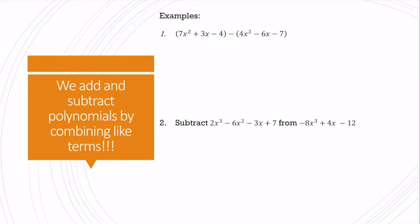So here I have 7x squared plus 3x minus 4 minus 4x squared minus 6x minus 7. And I'm doing subtraction examples because we need to remember to distribute this negative right here. So I have 7x squared plus 3x minus 4 minus 4x squared plus 6x plus 7. I distributed that negative. Now I can combine my terms.